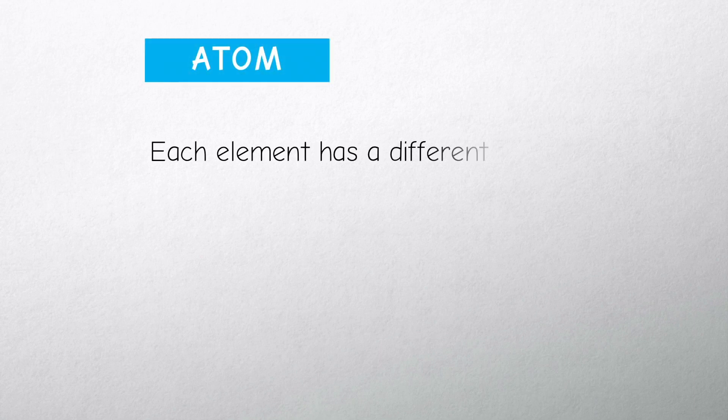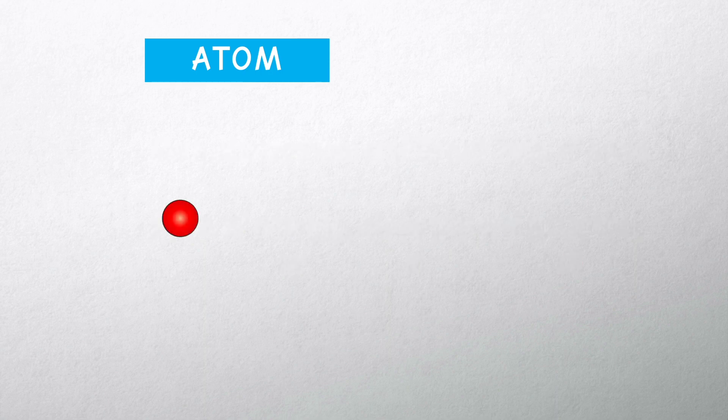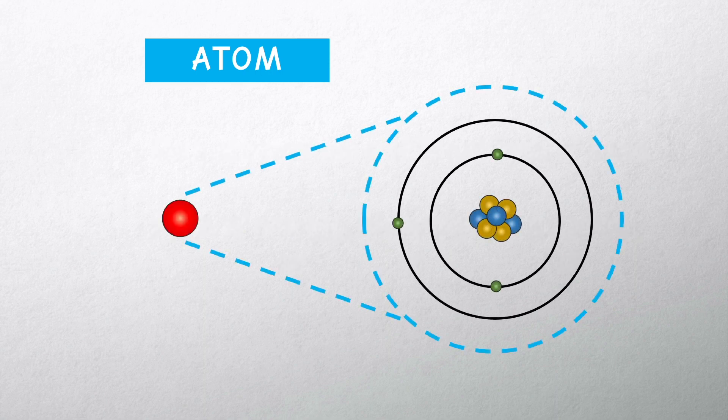Each element has a different type of atom, made of protons, electrons, and neutrons. You can learn more about atomic structure in the video linked in the description below.